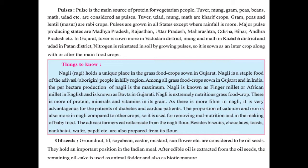Now let us know about Nagali, which is also known as Ragi. Nagali holds a unique place among grass fruit crops sown in Gujarat and is the staple food of Adivasi people in hilly regions. Among all grass fruit crops sown in Gujarat and India, the per hectare production of Nagali is maximum. Nagali is known as finger millet or African millet in English. It is extremely nutritious with more protein, minerals, and vitamins in its grain.